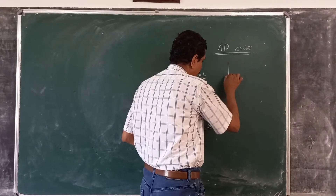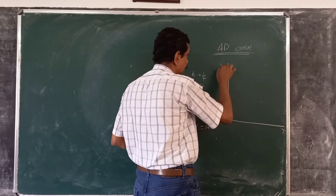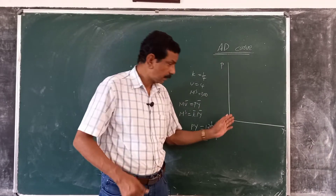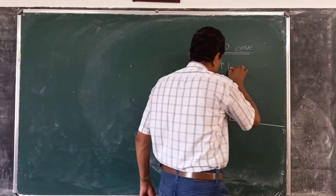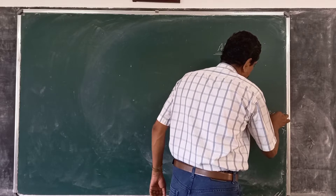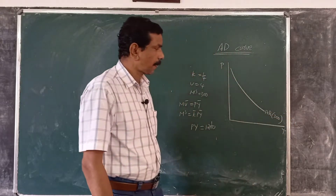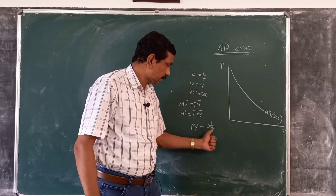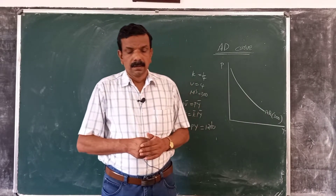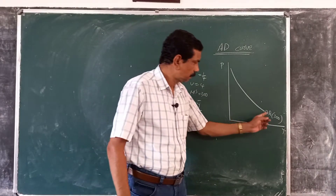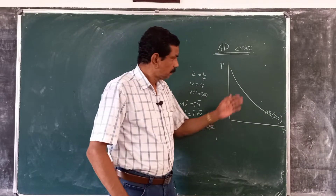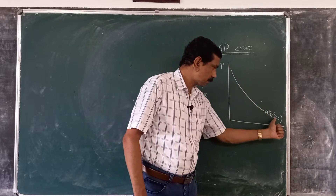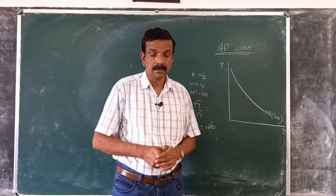This is given in the figure, where we take the aggregate price level on the vertical axis and real output on the horizontal axis. AD1(300) shows various combinations of P and Y where PY equals 1200. Points on AD1 may be a high P with a low Y, or a low P with a high Y. Along AD1, P × Y is always equal to 1200.